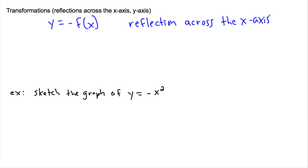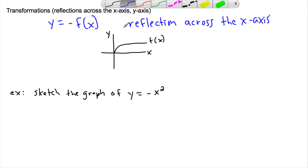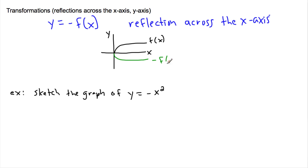So what that means is that if I had some sort of graph — it doesn't matter what it looked like, let's say some graph that did something like this — if this was f of x, and I did negative f of x, then it would look like this. It would sort of be flipped — maybe I'll make it green. It's like a mirror, so everything above becomes below.